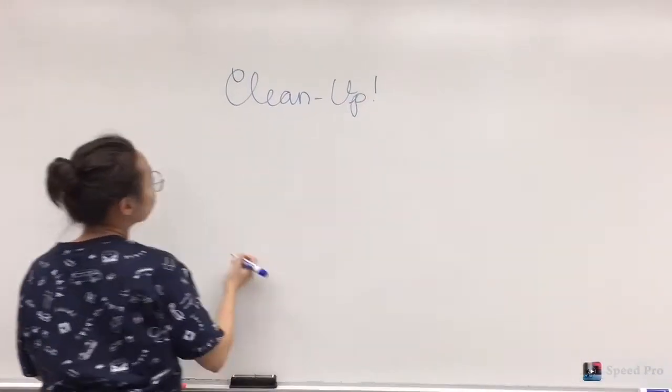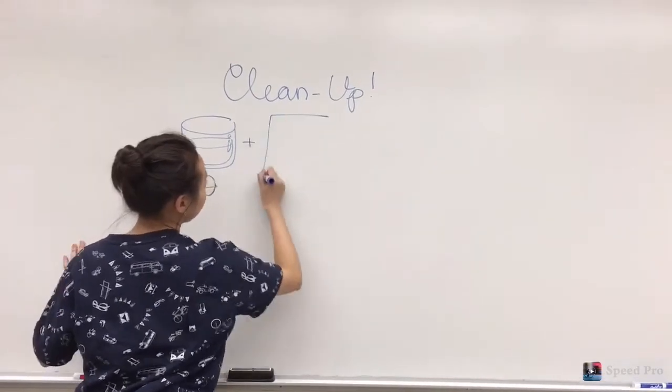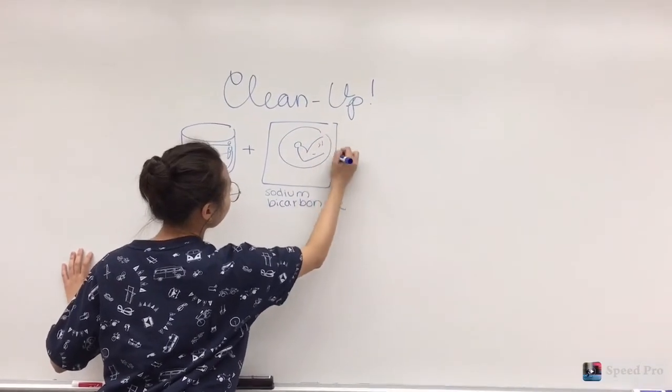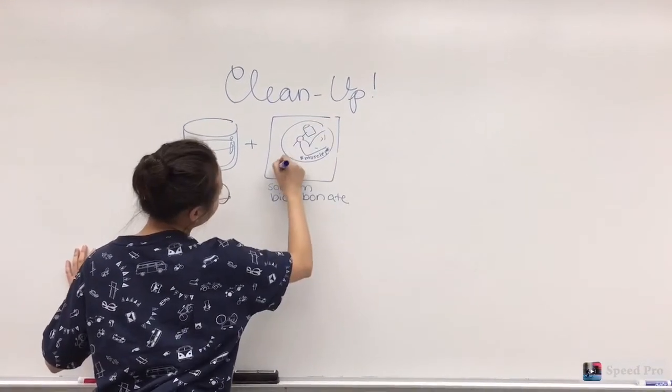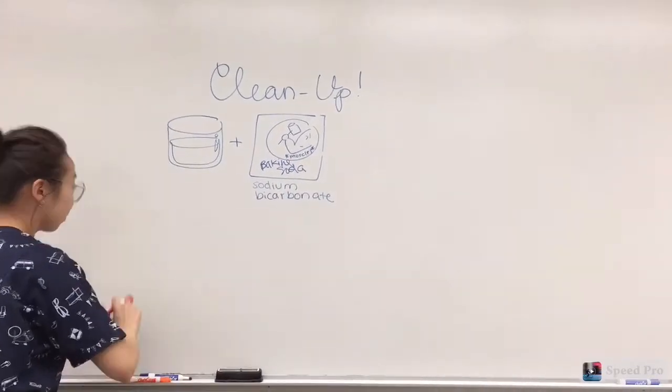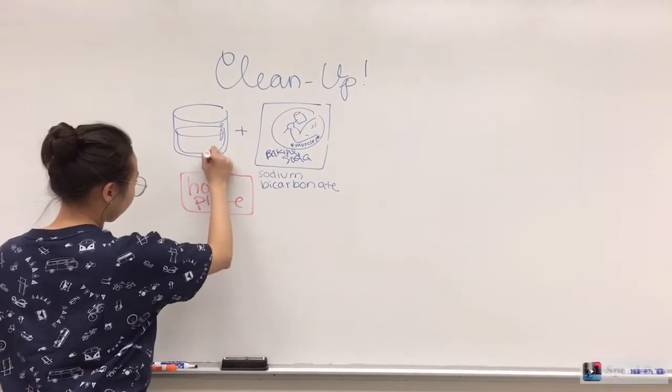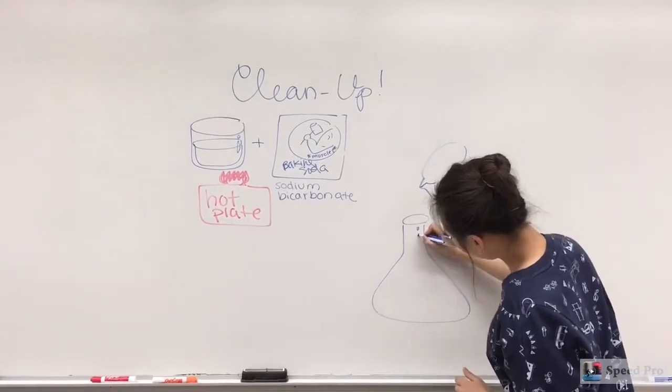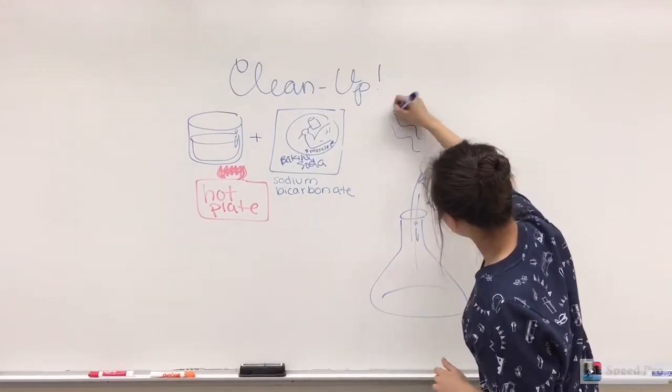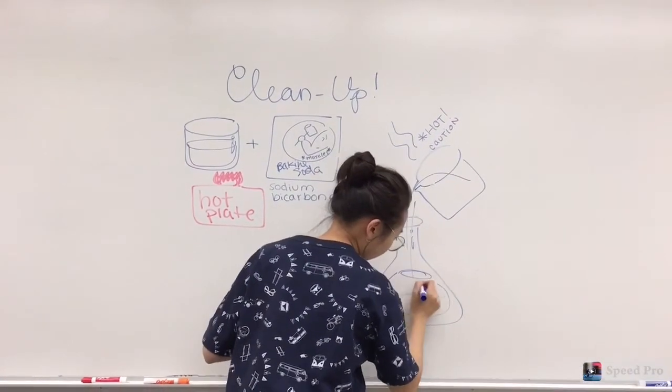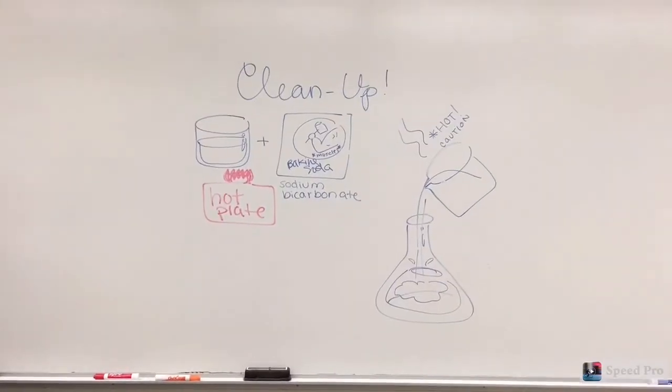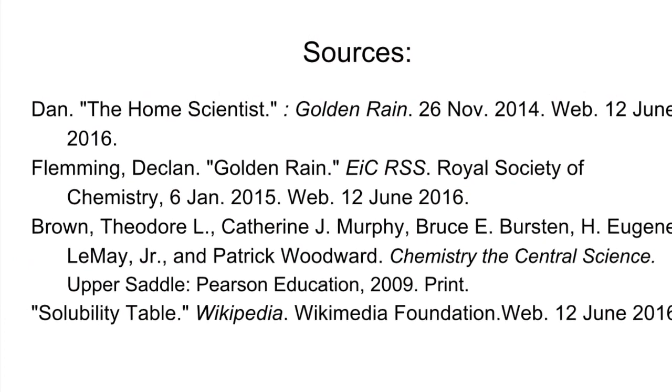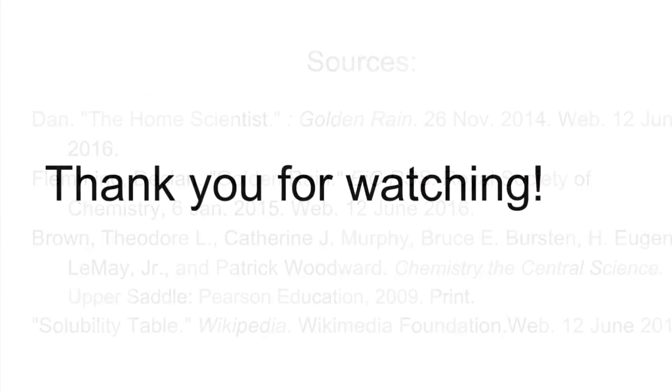Proper cleanup of this experiment was extremely important, as lead solutions are very toxic, especially if ingested. An oversaturated, hot aqueous sodium bicarbonate solution, aka baking soda, was created and used to neutralize and rinse out or off anything that came into contact with the lead solutions. Mixing the two formed a lead carbonate precipitate that could be thrown out. The solution left over contained baking soda and potassium nitrate, which could be disposed of down the drain. Thanks for watching!